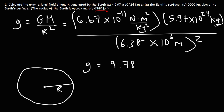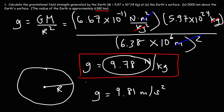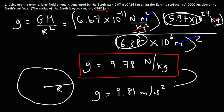For the units: one kilogram cancels, leaving one kilogram in the denominator since it was squared, and square meters cancel as well, so the units are newtons per kilogram. This answer is fairly accurate because we know the gravitational acceleration on Earth is 9.81 meters per second squared, and 9.78 rounds close to 9.8. If we used more exact values, we'd get an answer even closer.